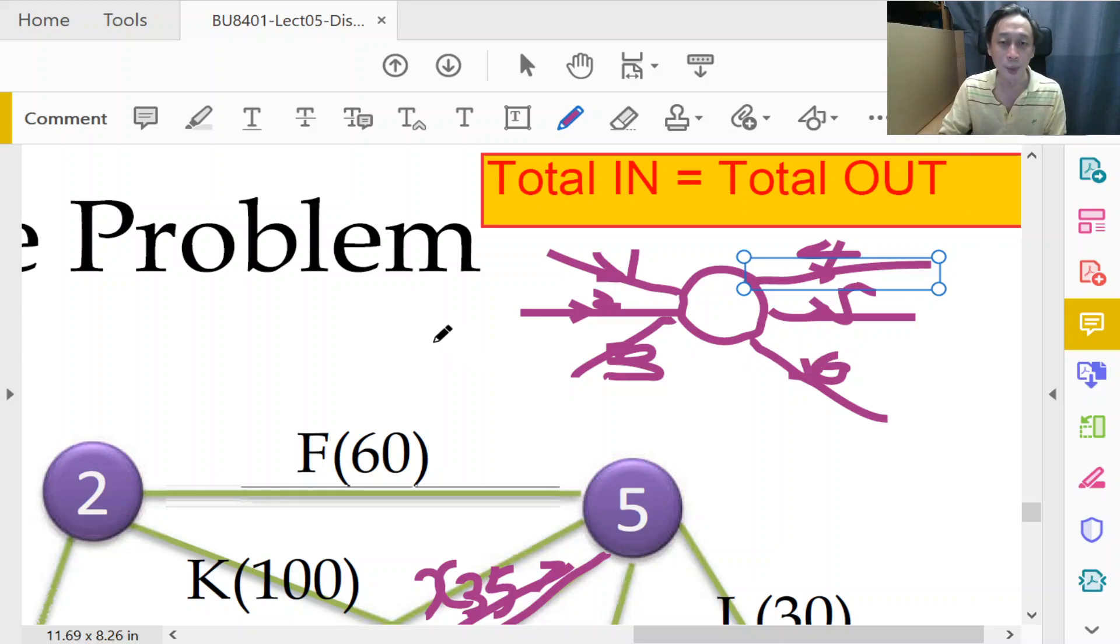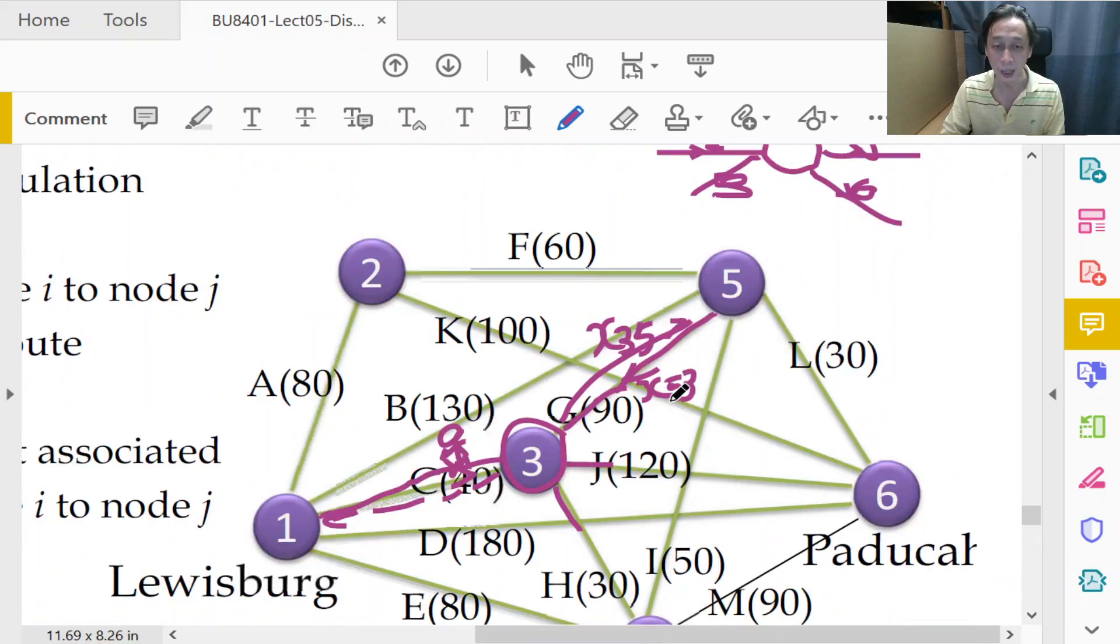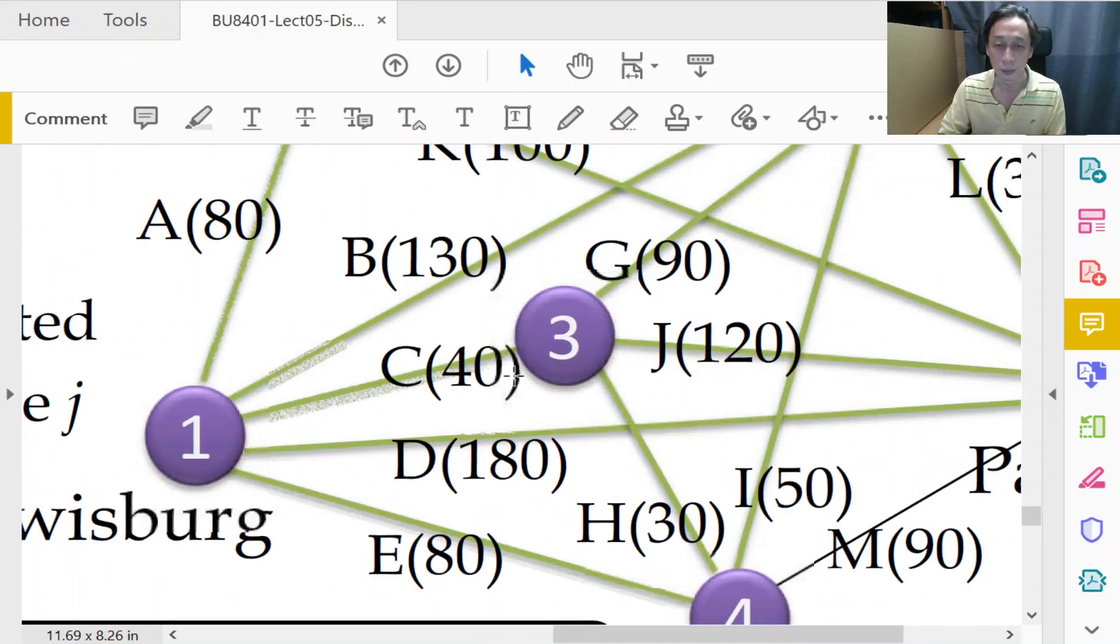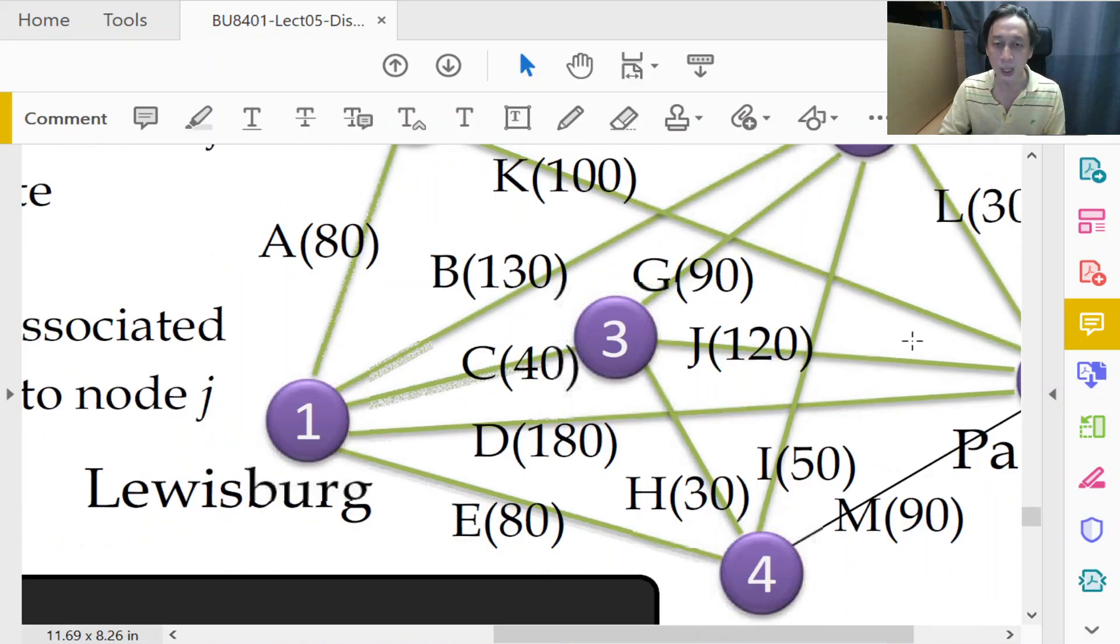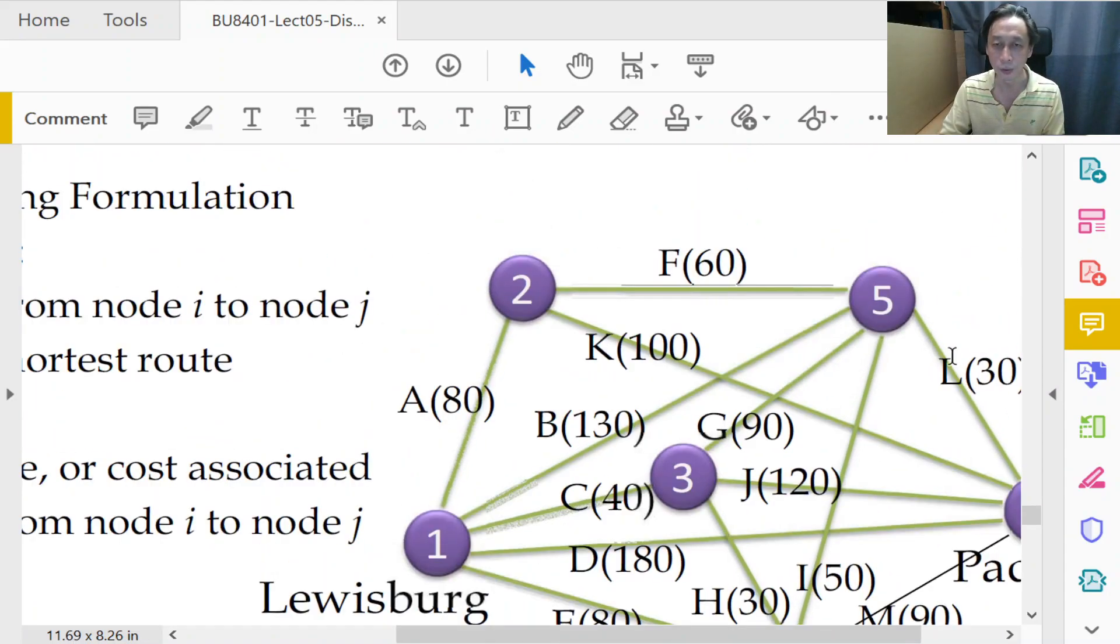Now, let's practice this total in equals to total out principle on an intermediate node like this, okay? So you can do it on 3 and I'm going to just clear the screen here a little bit just to make the link clearer. So, what is, what should we, what constraint should we write for a node like 3?